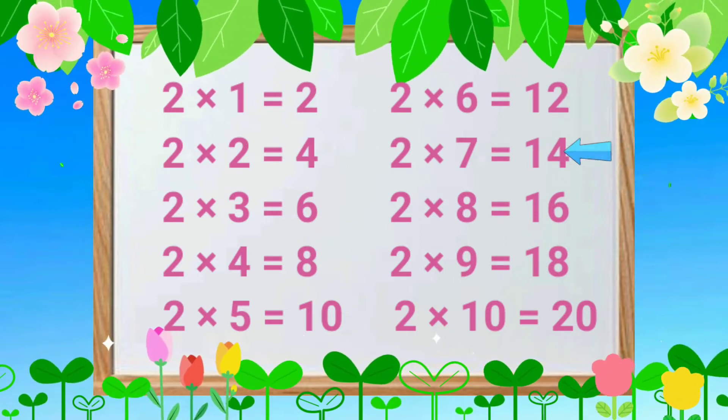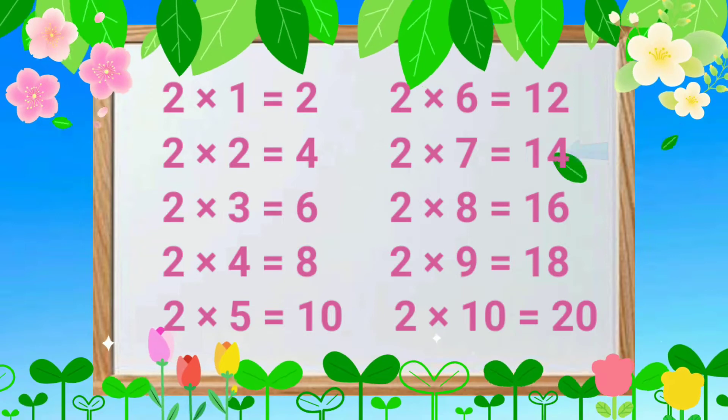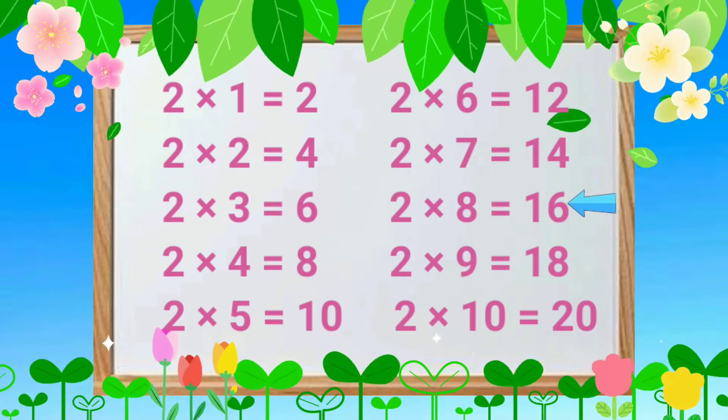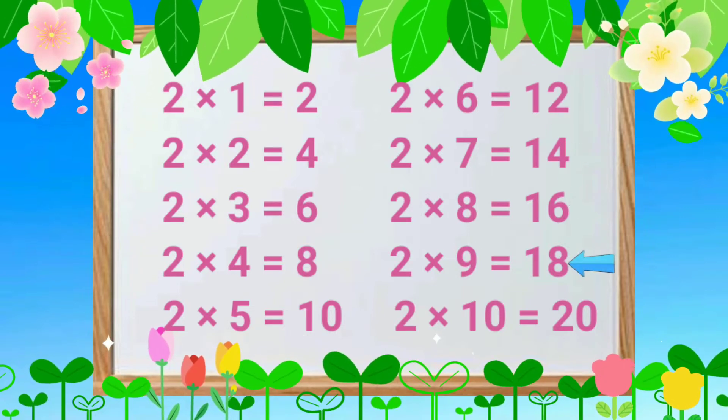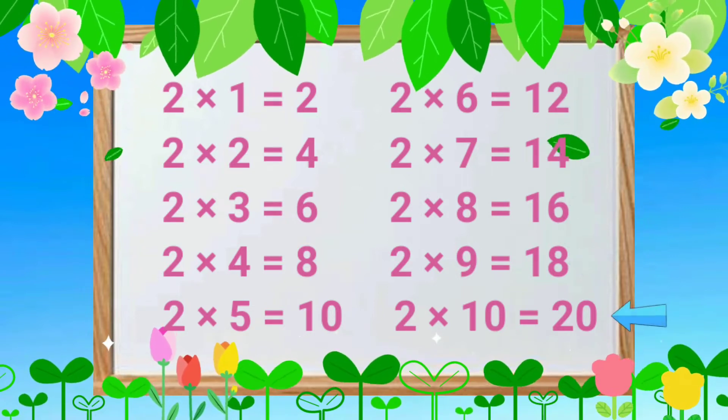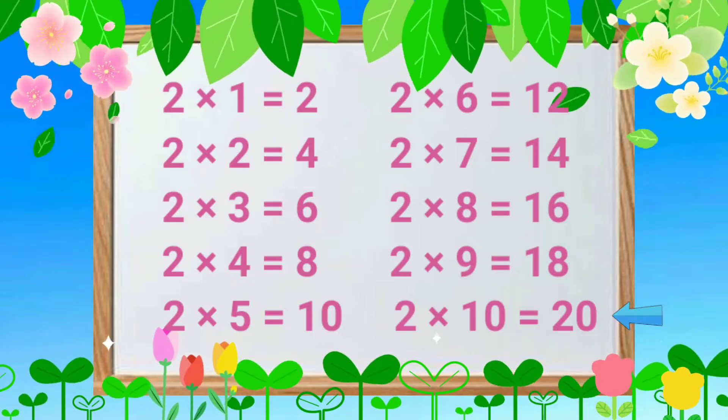2-7s are 14, 2-8s are 16, 2-9s are 18, 2-10s are 20.